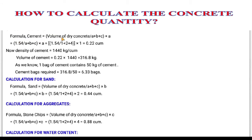Now we go to the dry volume calculation. The formula for cement is: volume of dry concrete divided by the sum of the ratios (a + b + c), then multiplied by the ratio you want to calculate. Since we want cement, we multiply by 'a', which is the cement ratio. So we divide 1.54 by the sum of the ratio, then multiply by the cement ratio.